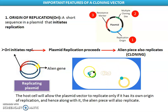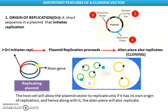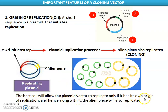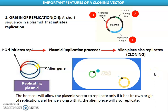You can see here how replication originates from a particular place and how the whole plasmid is replicating. Definitely in between there is a gene of interest that will also make a copy. So plasmid replication proceeds and the alien piece also will replicate. The host cell will allow the plasmid vector to replicate only if it has its own origin of replication, so that along with it the alien piece will also replicate.